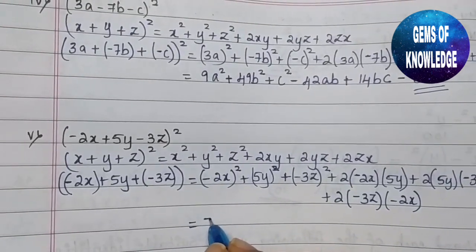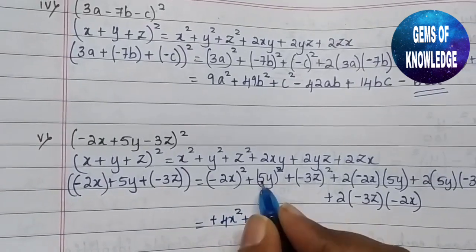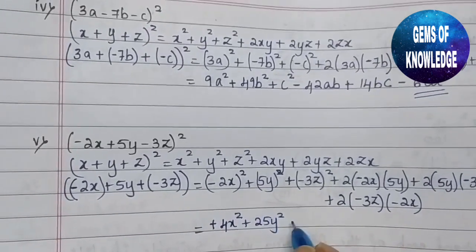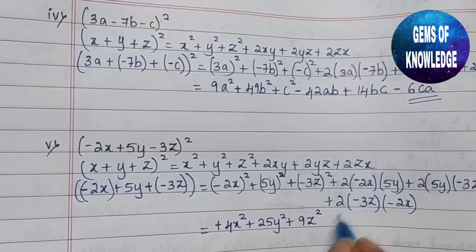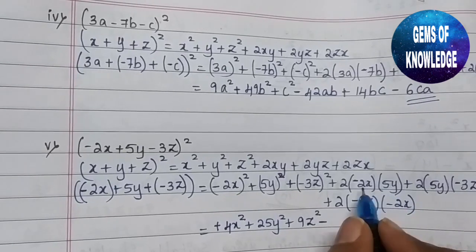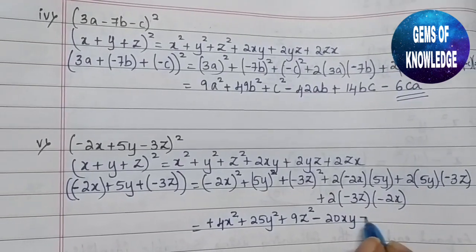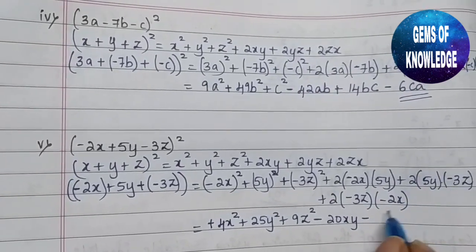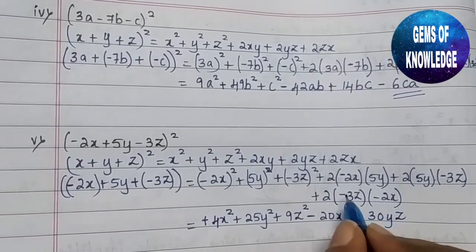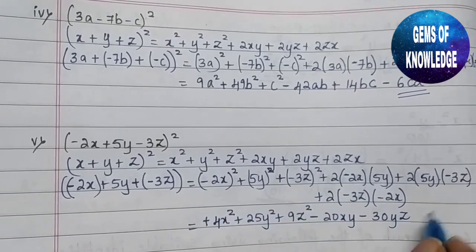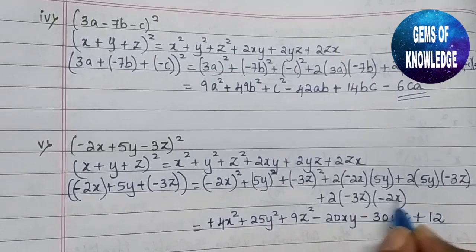Opening: (−2x)² = 4x², (−5y)² = 25y², (−3z)² = 9z². Then 2·(−2x)·(−5y) = −20xy, 2·(−5y)·(−3z) = −30yz, and 2·(−3z)·(−2x) = +12zx. So the result is 4x² + 25y² + 9z² − 20xy − 30yz + 12zx.